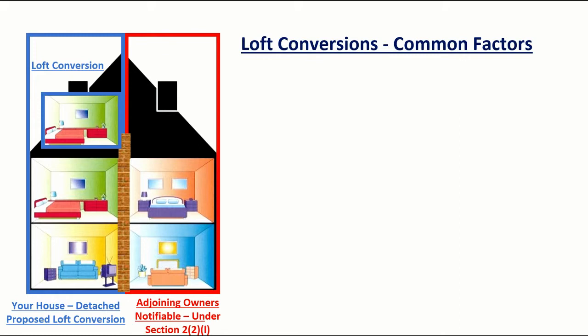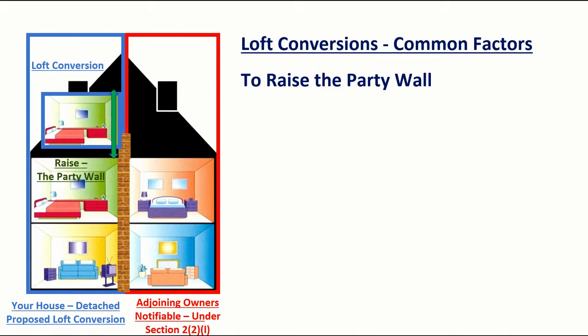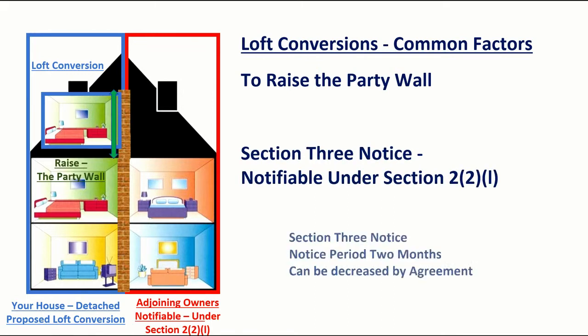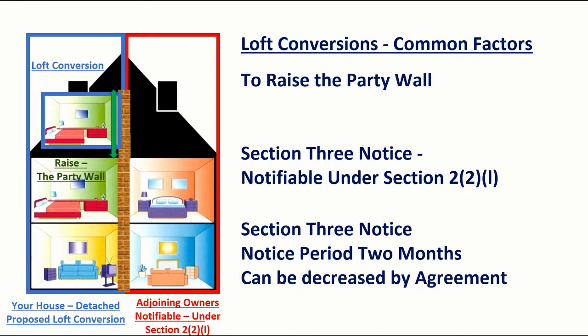In some loft projects, party walls are raised to form dormer cheeks — that is, the side walls of the loft conversion — in order to gain extra space. These are permitted under section 2 of the Act and notifiable via a section 3 notice.